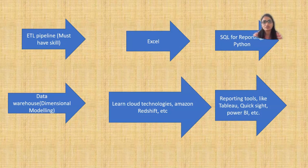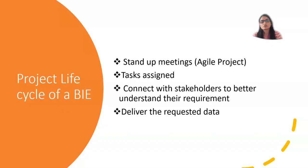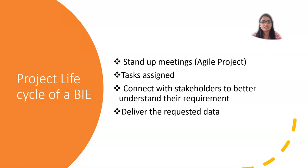If you know all these skills, you should hopefully be able to get a job as a BI engineer. Now let's look at how a BI project life cycle works. It is very similar to software engineering or data engineering. Companies use an Agile project methodology with sprints of two, three, or four weeks depending on the team and the complexity of their use cases.